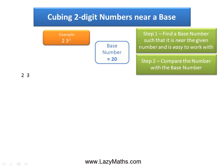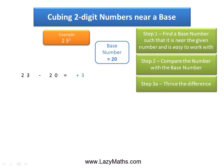The next step is to compare the base number and the original number. So 23 minus 20 gives us positive 3. The next step is to find thrice the difference. Thrice of positive 3 is positive 9.